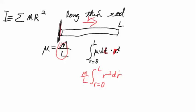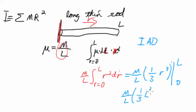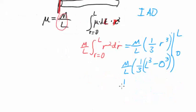R is the radius away from that point. When we do this integral, we keep our constant, and when you integrate, you add one to the exponent and then divide by it, so this is going to be one-third R cubed going from zero to L. It'll be M over L times one-third of L cubed minus zero cubed, and that comes out to be one-third ML squared.